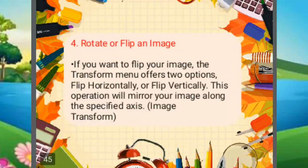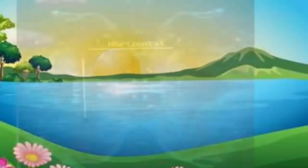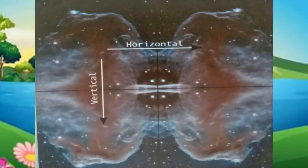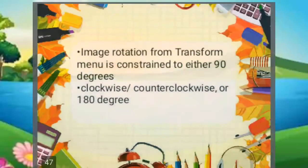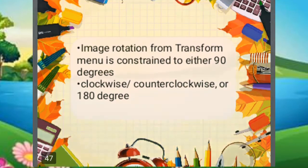And the last main point in using GIMP is rotating or flipping an image. If you want to flip your image, the Transform menu offers two options: flip horizontally or flip vertically. This operation will mirror your image along the specified axis via Image > Transform. Image rotation from the Transform menu is constrained to either 90 degrees clockwise or counterclockwise, or 180 degrees.